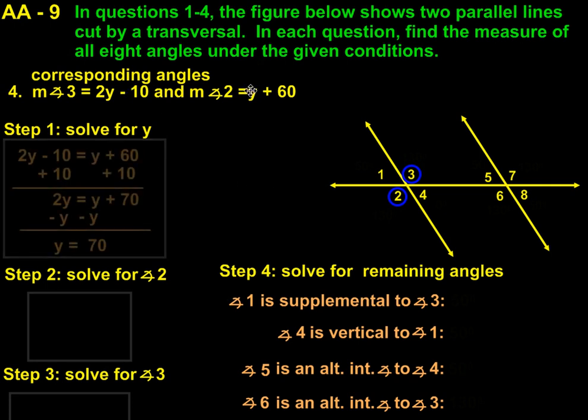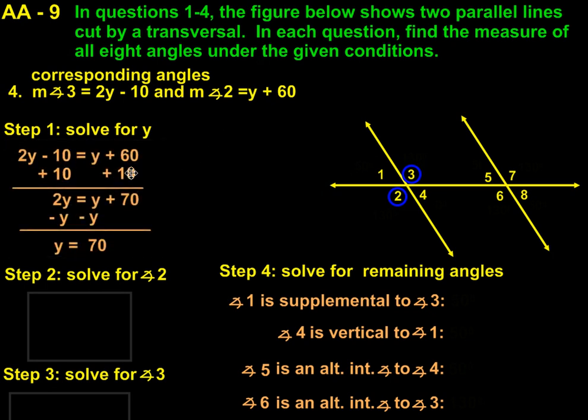So if we take both of these equations and set them equal to each other, subtract 10 from both sides, subtract y from both sides, we get y equals 70. And then we can take 70 and substitute it back into each of these equations.